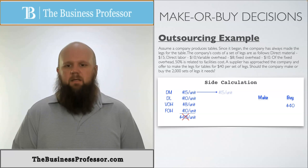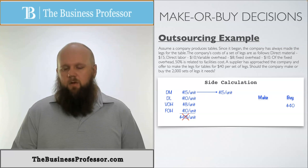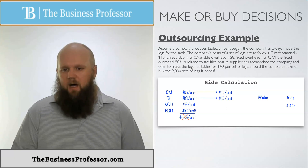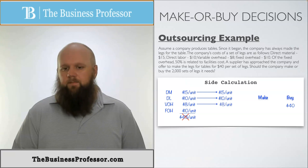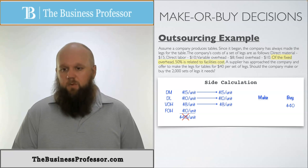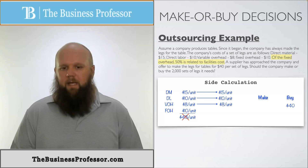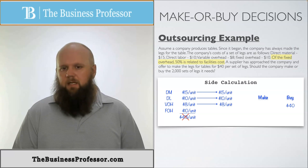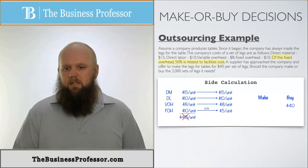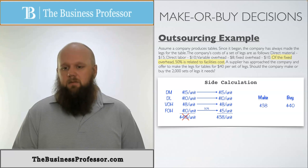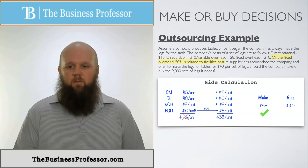We need to look only at the relevant costs. Direct material $15, direct labor $10, and variable overhead $8 are all avoidable if we buy — so they're relevant. But fixed overhead is different: 50% is related to facilities cost, meaning that 50% is unavoidable no matter what. So only the avoidable 50% matters, which is $5. Adding $15 + $10 + $8 + $5 gives a true make cost of $38 per unit. Since $38 is less than the $40 buy price, the better decision is to make it in-house — saving $2 per unit.